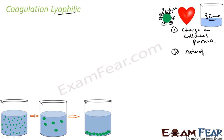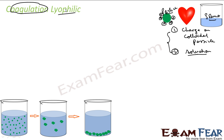The second factor is solvation. Solvation is nothing but the mixing of the colloidal particles into the solvent — it represents the love of the colloidal particle for the solvent. So there are two factors for the stability of a lyophilic solution. If you want to coagulate this kind of solution, you can either remove the charge on the colloidal particle.